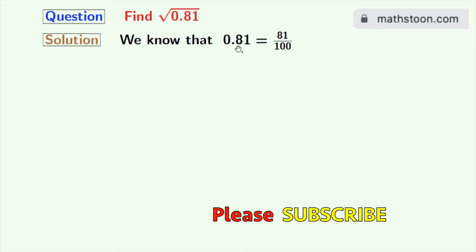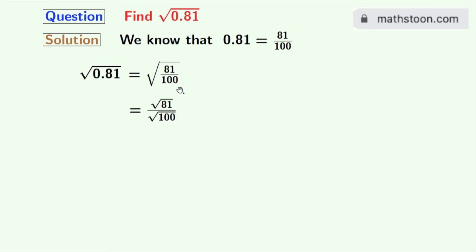Now if we take square roots on both sides, we get square root of 0.81 is equal to square root of 81 by 100. Now rewriting this, we get square root of 81 by square root of 100.